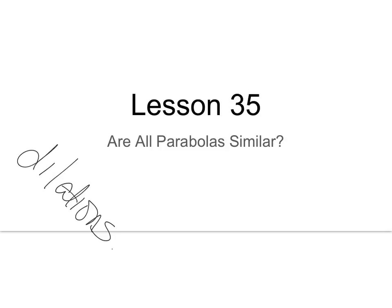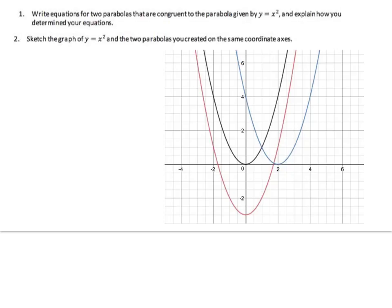First, you're going to need either graph paper or Desmos to look at these things. I could make you graph everything, but that is a long and tedious process, so Desmos is going to be your friend. In your exercises, it says: write equations for two parabolas that are congruent to the parabola given by y equals x squared, and explain how you determined your equations.